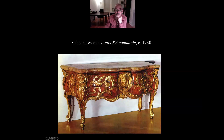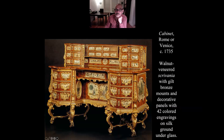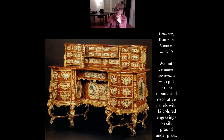There is another Louis the 15th commode with dragons. This one is from Venice — a walnut scrivania with bronze decorative panels and 42 colored engravings on silk ground under glass. This is Venetian Rococo — very interesting. There are these little decorative panels that almost seem like the wood is peeled away with a little golden frame around it. Pretty beautiful, a lot going on.